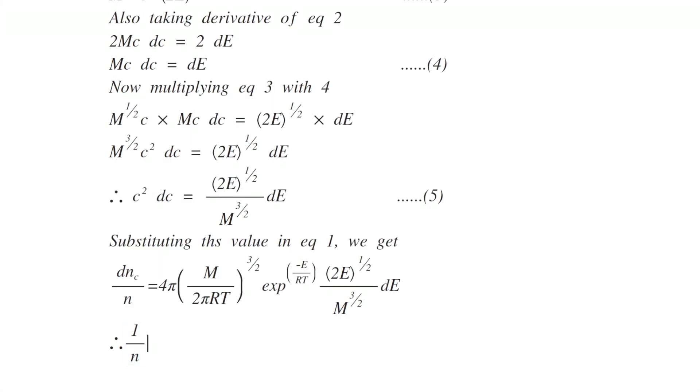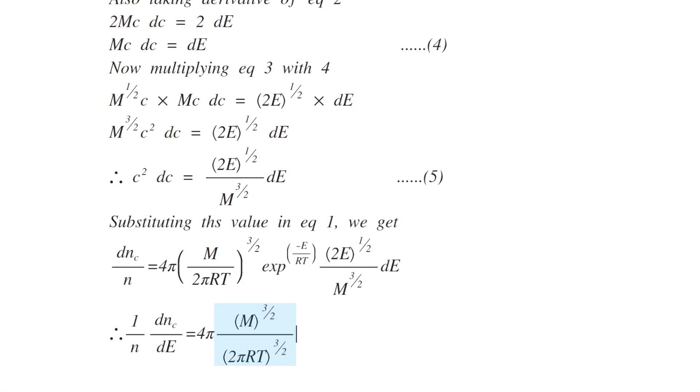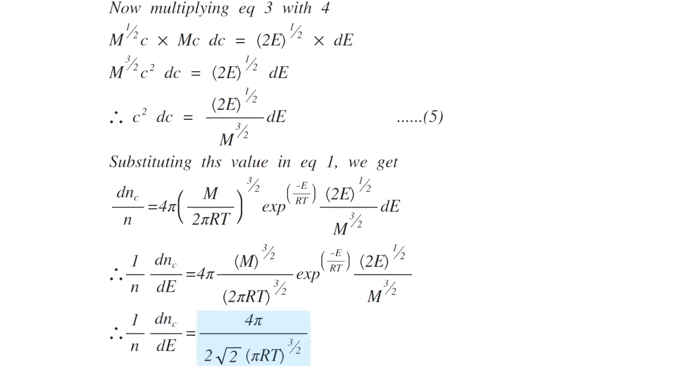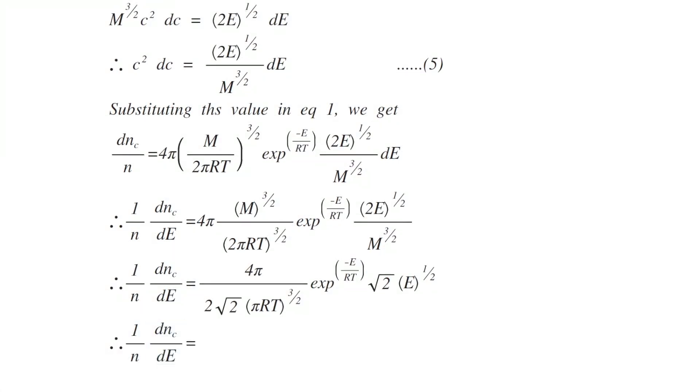Simplifying this equation further you get 1 by n dNc by dE equals 4 pi m to the power 3 by 2 divided by 2 pi RT 3 by 2, exponentially minus E by RT power to half, E to the 1 by 2 divided by m power to 3 by 2. We can cancel m power to 3 by 2 from both sides.